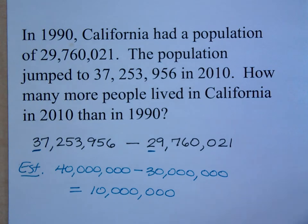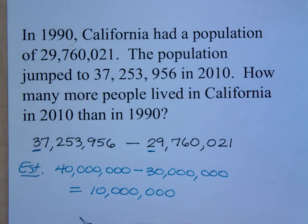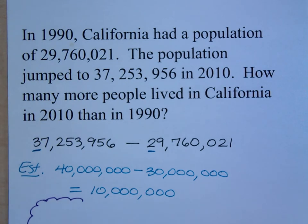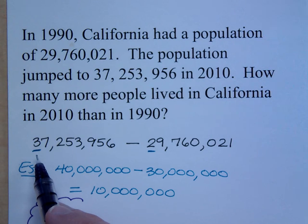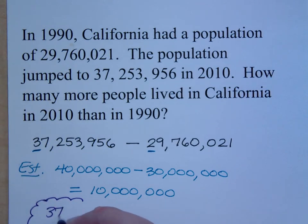Now I'm going to tell you, this is the way the book wants you to do front-end rounding, and this is how you do front-end rounding. I don't have a problem with that. What I have a problem with is, this is not how I would round. I usually round to a number where I don't lose a lot of information. I like a little bit more accurate estimate — I know an estimate is just that, it's not supposed to be exact. I wouldn't round 37,253,956 to forty million; I would probably round it to thirty-seven million. If I round to the nearest million, it's thirty-seven as opposed to thirty-eight. So this is about thirty-seven million minus what?